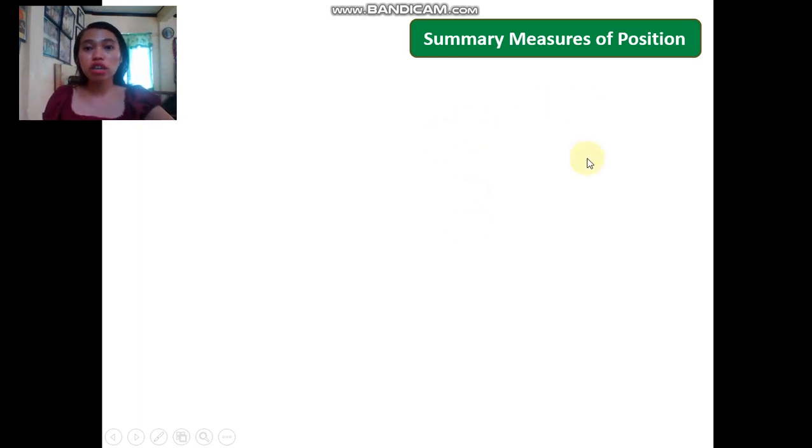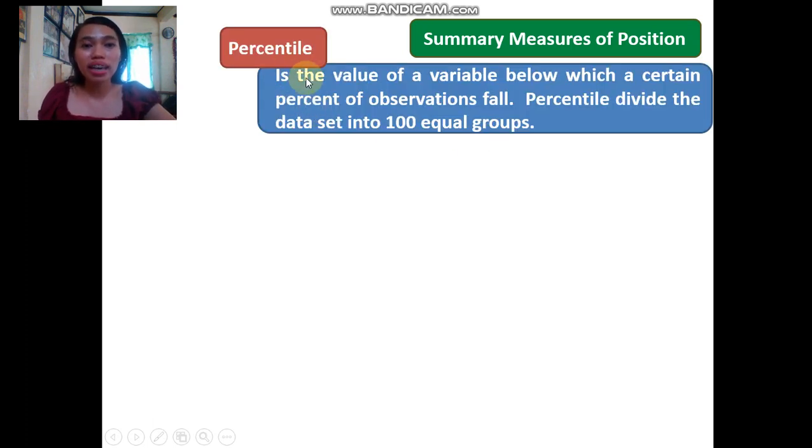Let's discuss summary measures of position. We're done with z-score or standardized score. Let's move to percentile. Percentile is the value of a variable below which a certain percent of observations fall. Percentile divides the data set into 100 equal groups.